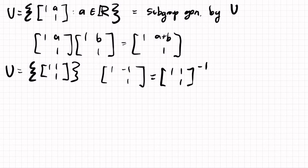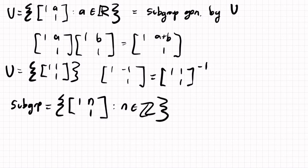So the subgroup will be matrices of the form [1, n; 0, 1] for any n in ℤ, the integers.